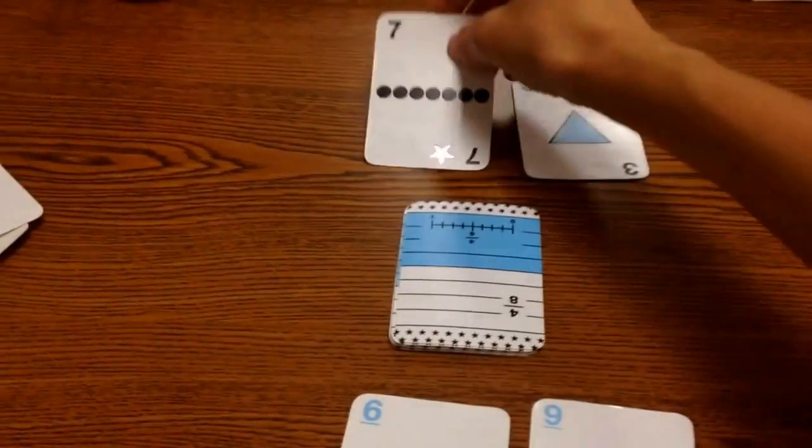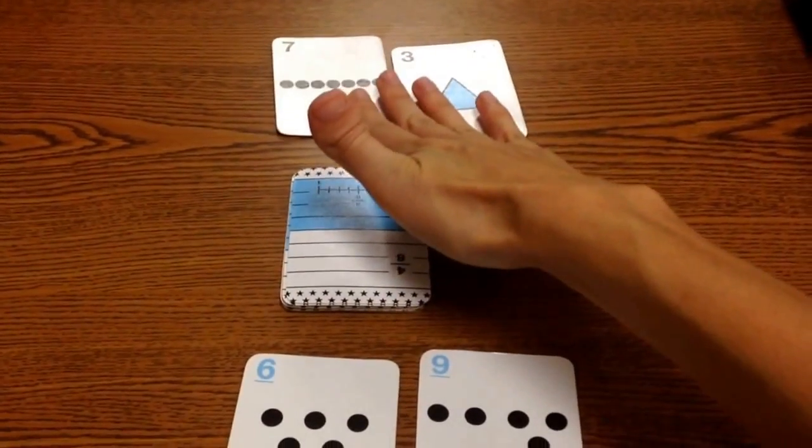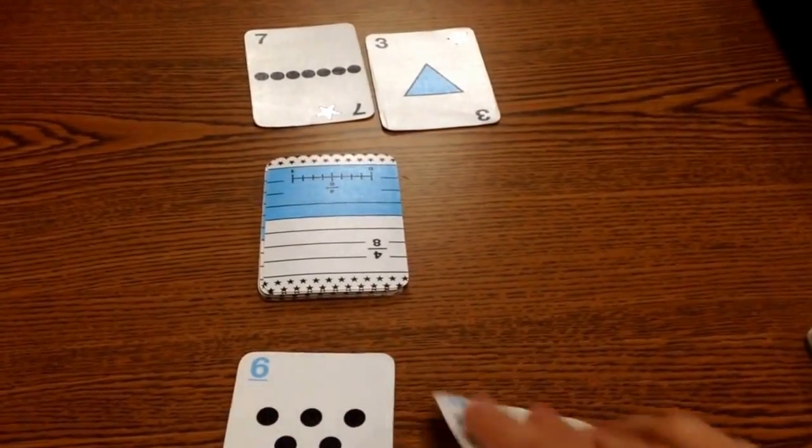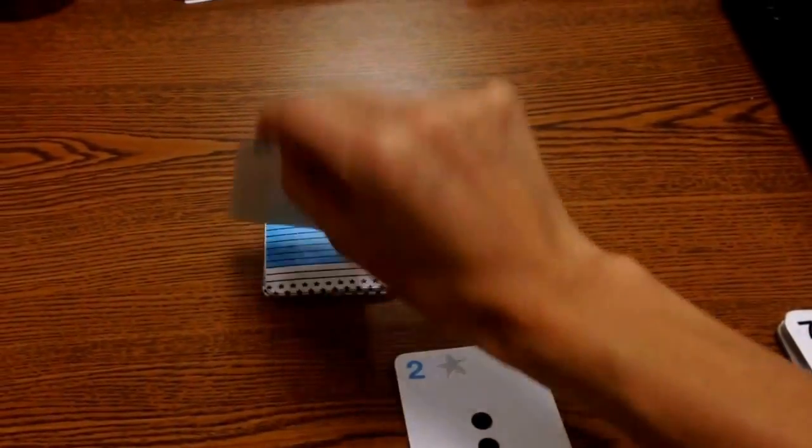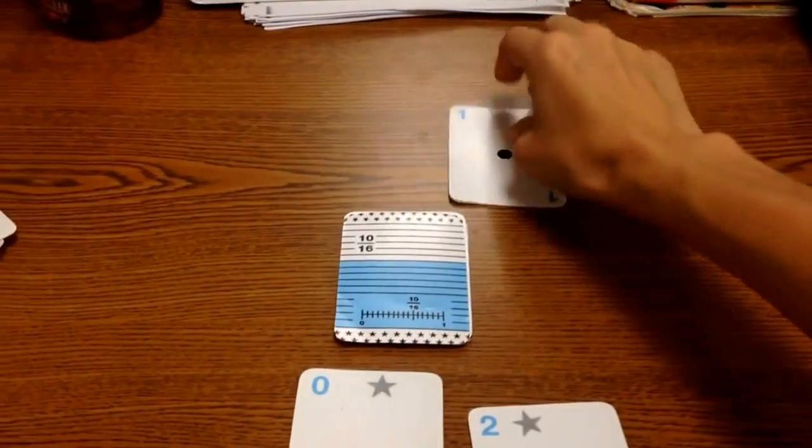All right. We'll draw again. My partner has 10. And I have 9 plus 6, which is 15. Again, the higher number. So, we will continue to play like this, drawing cards and adding them together.